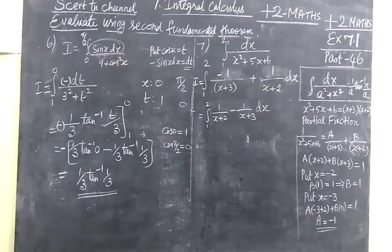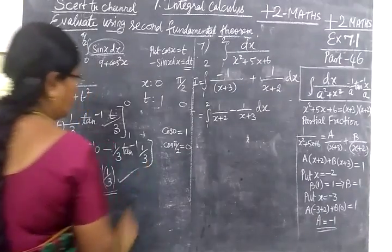Tan inverse 1 by 3. Now you check the answer for that. So 1 by 3 tan inverse 1 by 3. So this answer is correct.